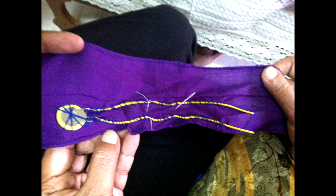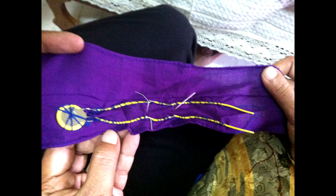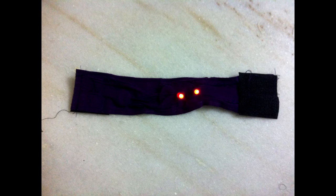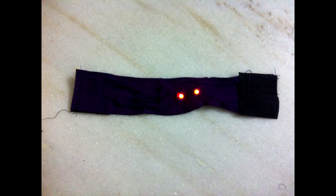Solder this circuit with normal wires and stitch it to the cloth using needle and thread. Have the LEDs such that they come out from the other side of the cloth.